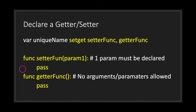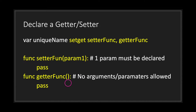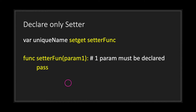Two things to keep in mind. The first is that your setter function must have exactly one argument — no more than one and no less than one. The second thing to keep in mind is your getter function: you are not allowed to have any arguments. The arguments allowed is zero for your getter function. If you do not follow any of these rules you will throw an error in Godot.